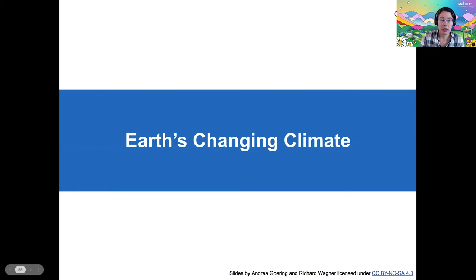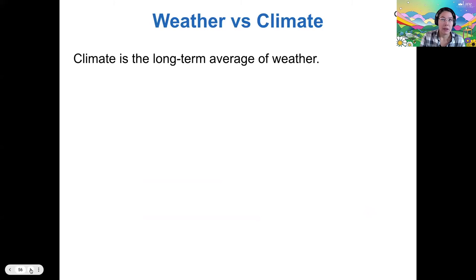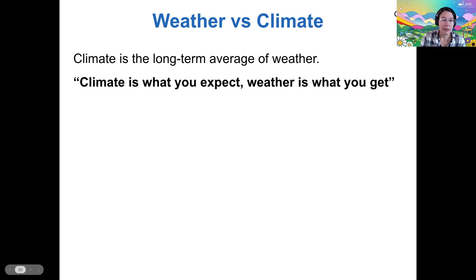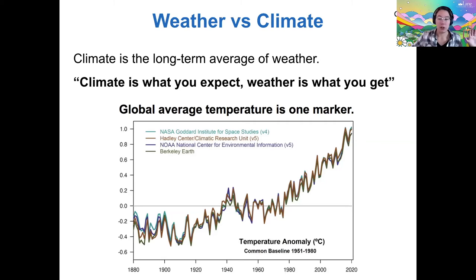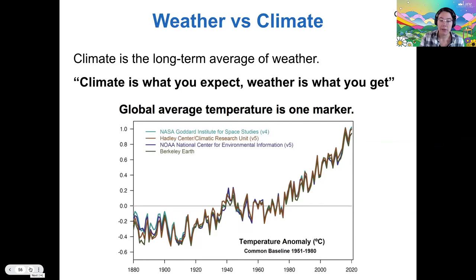This brings us to our changing climate. There's one important difference between weather and climate, which is that climate is a long-term average — a long-term condition — whereas weather is a short-term fluctuation. Climate is what you expect; weather is what you get, is one simple quote to keep those separate. We use global average temperature as one marker of climate. Even though there are different temperatures all over the surface of the Earth, if you take an average temperature and track how that changes over time, we can see how climate has changed throughout Earth's history. It has changed many times, and we're currently in a period of accelerating change.